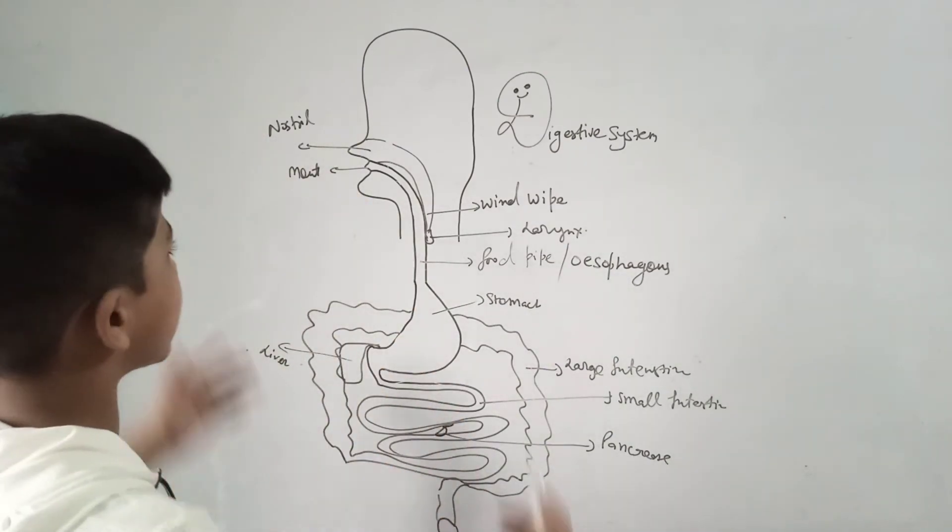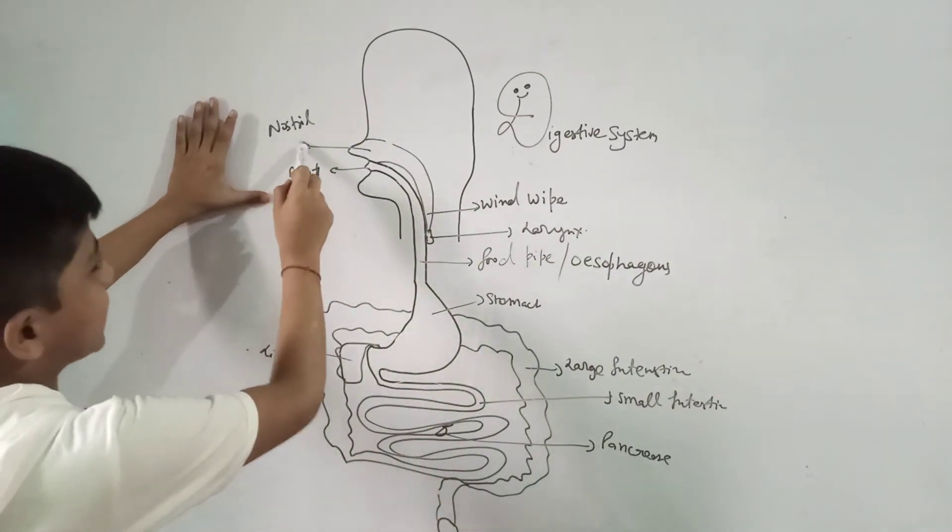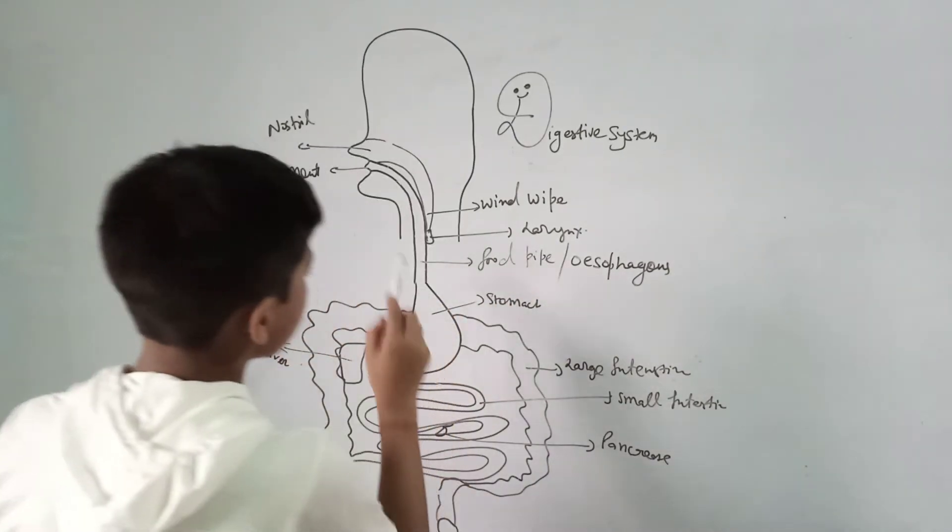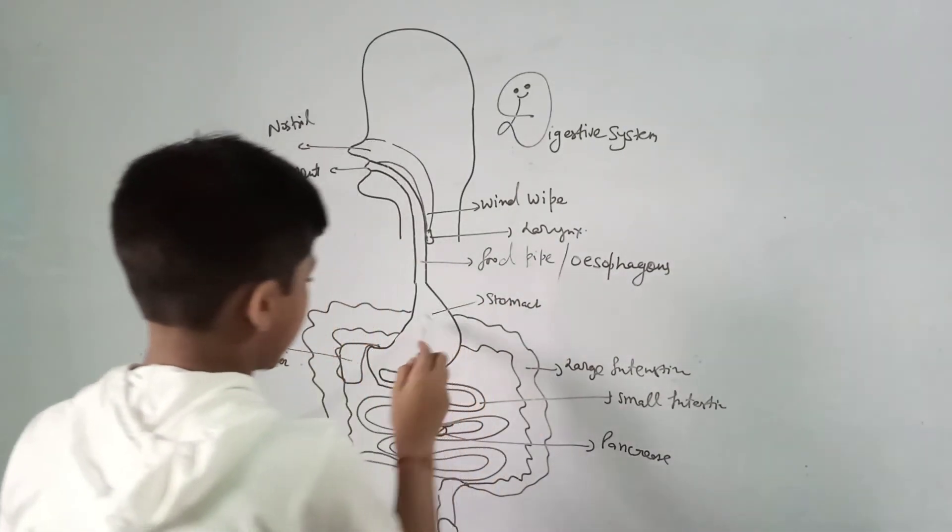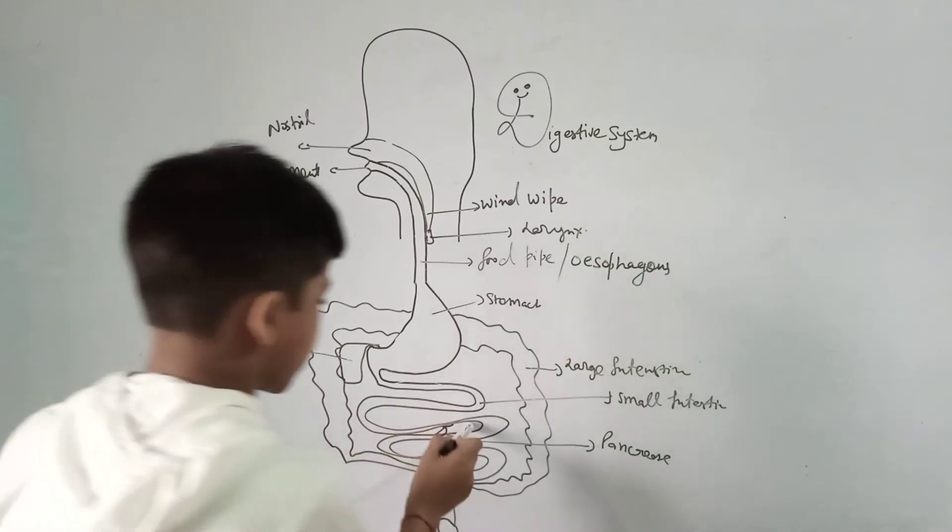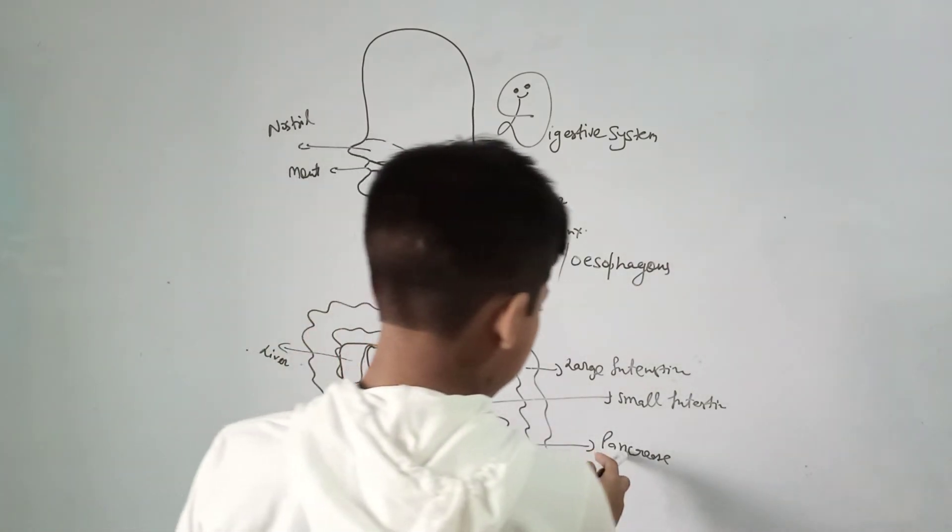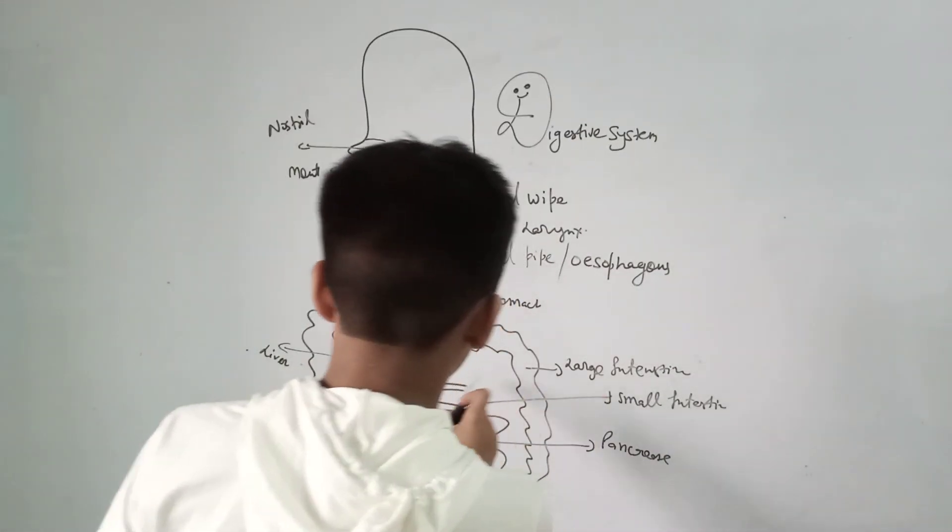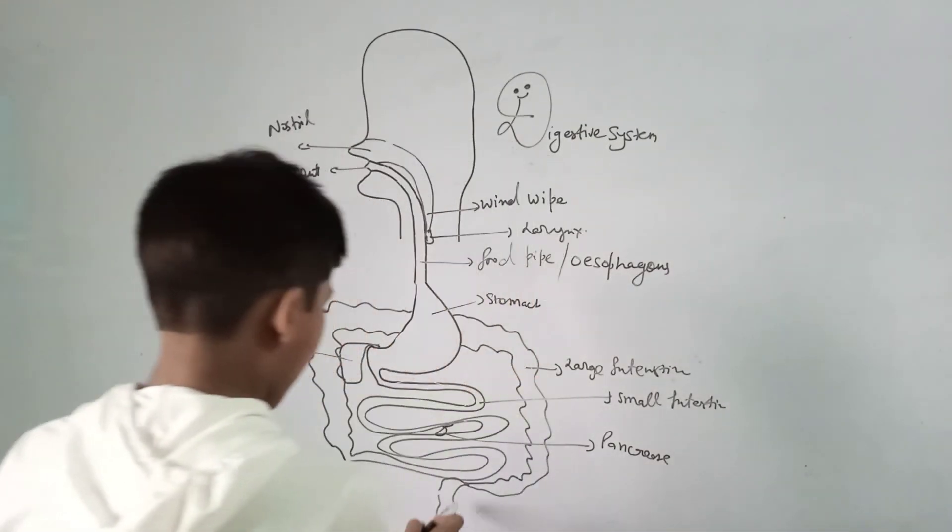I am again telling you: it is the windpipe, it is the food pipe, it is the mouth, it is the stomach, it is the liver, it is the large intestine, it is the pancreas, it is the small intestine, it is the large intestine.